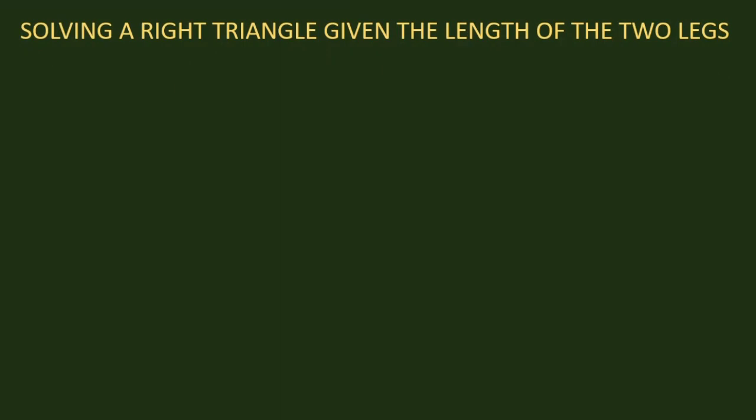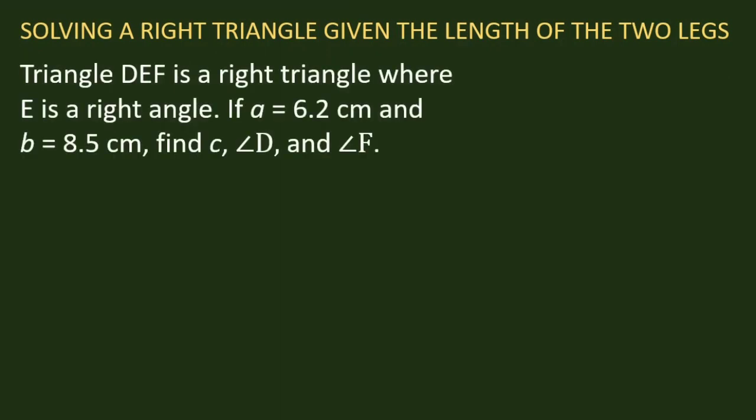Hi there, this is Sir Matigo. Welcome to this channel. Today I'm going to discuss problems regarding trigonometric ratios. For example, triangle DEF is a right triangle where E is a right angle. If a = 6.2 centimeters and b = 8.5 centimeters, find c, angle D, and angle F.